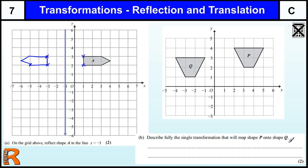OK, what single transformation maps P onto Q. We're going from P to Q, so we're going from here to here. The shape is exactly the same shape. It's not been rotated. It's not been reflected.